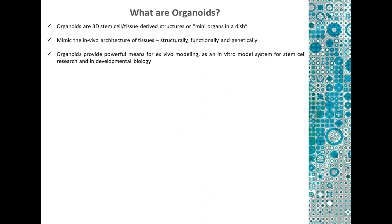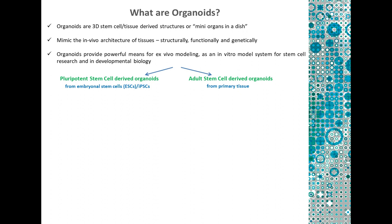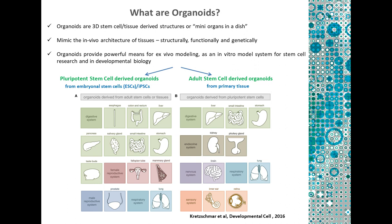Because of these features, organoids provide really powerful means for ex vivo modeling as an in vitro model system for stem cell research and also in developmental biology. Stem cell organoids can be developed from two different kinds of stem cells: pluripotent stem cell-derived organoids, which are basically embryonal stem cells or induced pluripotent stem cell-derived organoids, and the adult stem cell-derived organoids. From the adult stem cells, we have isolated and developed intestinal organoids, liver organoids, ovarian organoids, and lung organoids, whereas from the pluripotent stem cells, liver, stomach, even kidney organoids have been developed, as well as brain organoids, which have been used recently for Zika virus infection studies, and other sensory organoids.